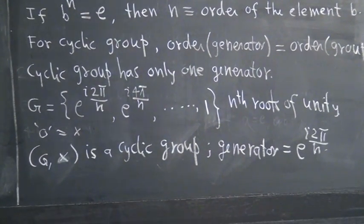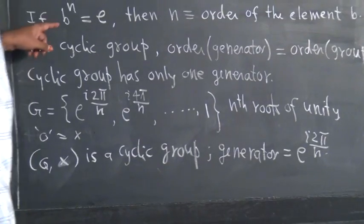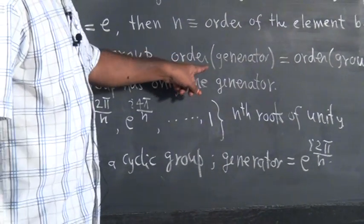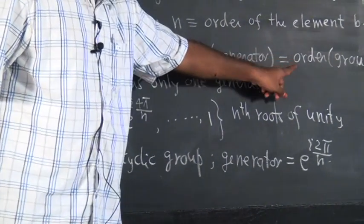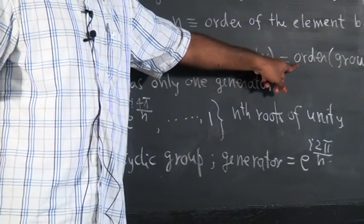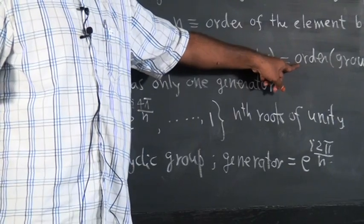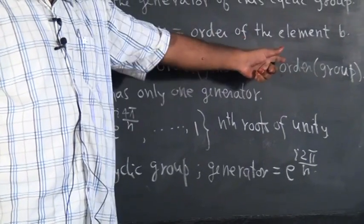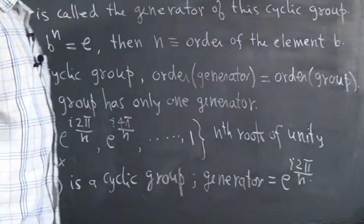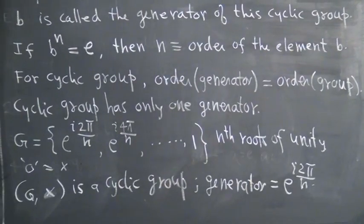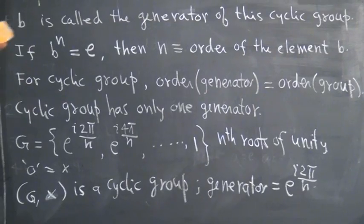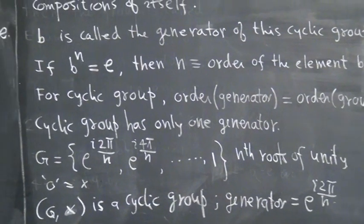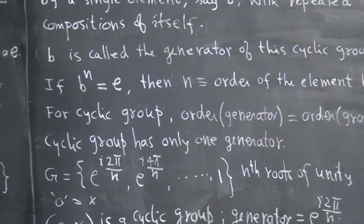That is not true for non-cyclic groups. The order of the generator is in general not the order of the group for any arbitrary group. Only for cyclic groups this is true. Let me construct a non-cyclic group as an example.